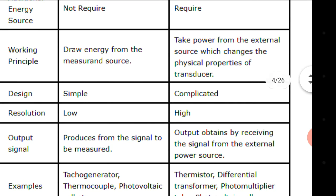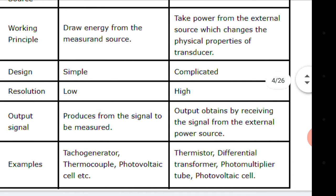Design: in the case of active sensors or active transducers, the design is simple, and in the case of passive sensors, the design is complicated. The resolution of the active sensor is low, while the resolution of the passive sensor is high. Regarding output signal: in the case of an active sensor, the signal is produced from the quantity being measured, and in the case of a passive sensor, the output is obtained by receiving the signal from the external power source.